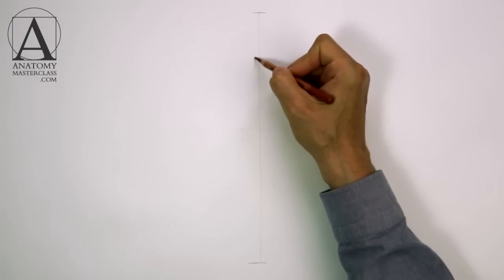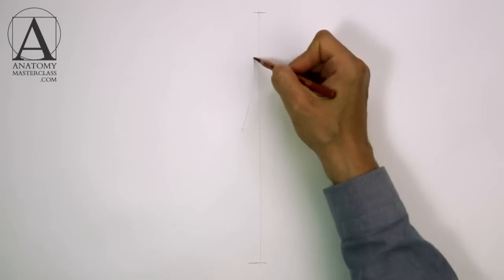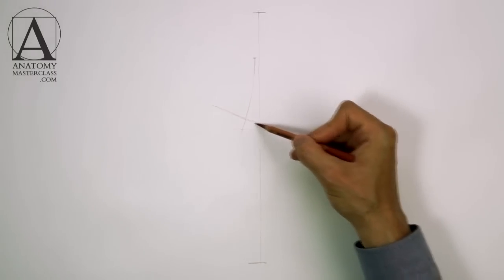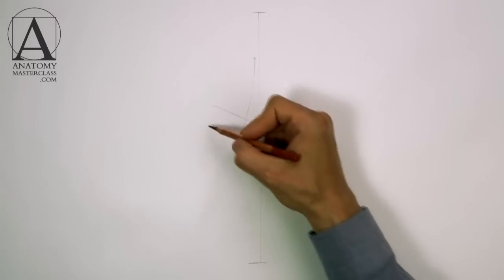Heracles stands in the contrapposto position. However, he also rests on his club. Therefore, the vertical central line will not coincide with his center of gravity.